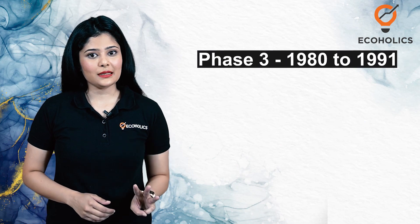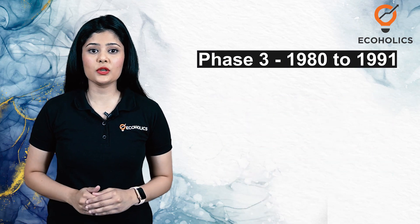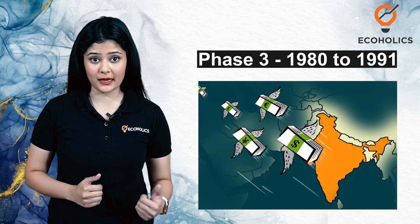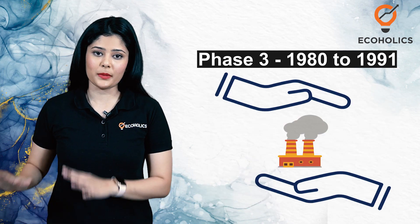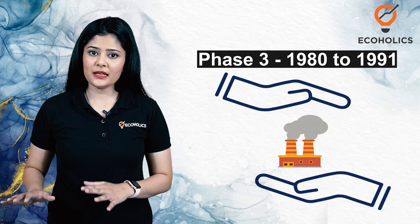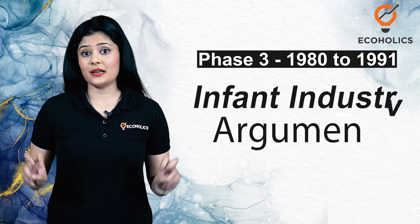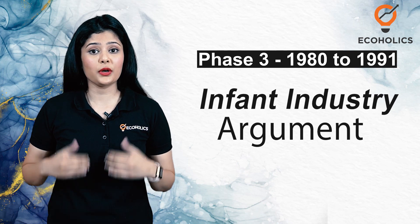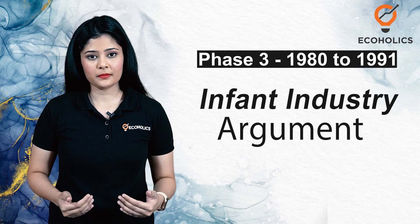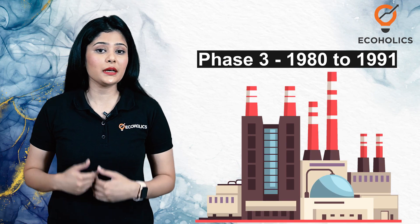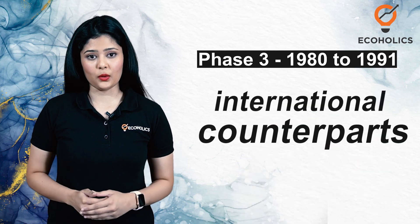During Phase 3, India started the process of gradual liberalization. The government focused on attracting foreign investment on one hand, and on the other hand, it focused on protecting domestic industries. The argument given in favor of this protectionism was the infant industry argument. It refers to the protectionism given to a particular industry in the initial years, as our industries were thought to be incapable of facing competition with their international counterparts.